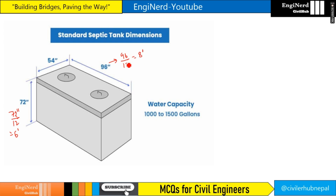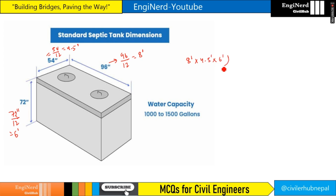Now for 54 inches: since 1 foot equals 12 inches, 54 divided by 12 equals 4.5 feet. So our dimensions will be 8 feet by 4.5 feet by 6 feet. This is the standard tank dimension.